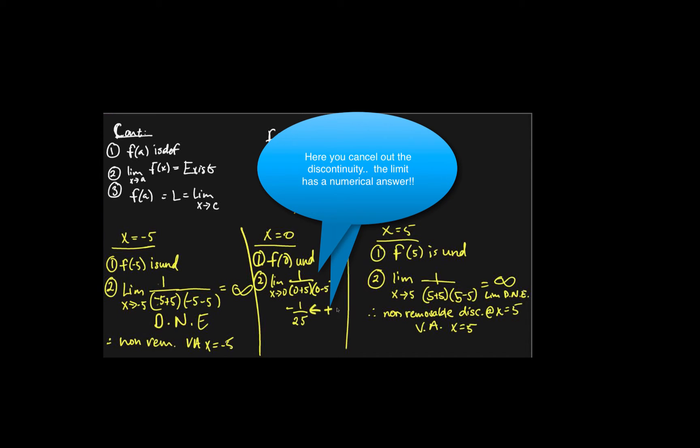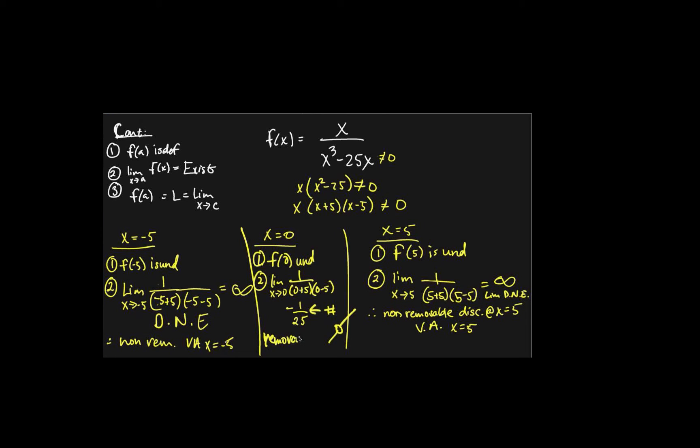So, because this is a number, that means we have one of those open dots. So, we have a removable discontinuity. It's removable because it's defined somewhere else rather than at the point it should be, at x equals zero. Right? We literally cancel the x's and remove the x. Got it.